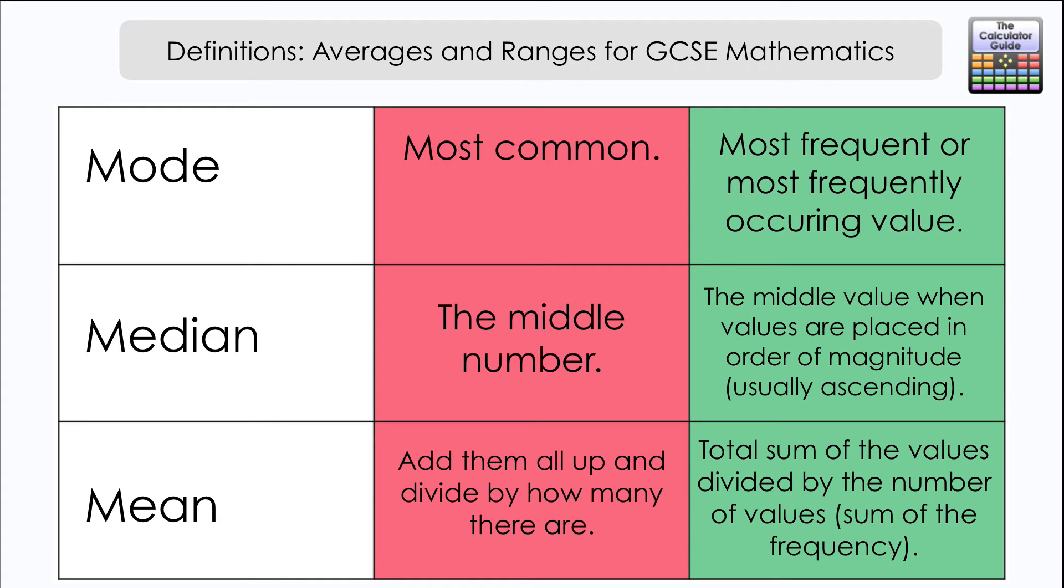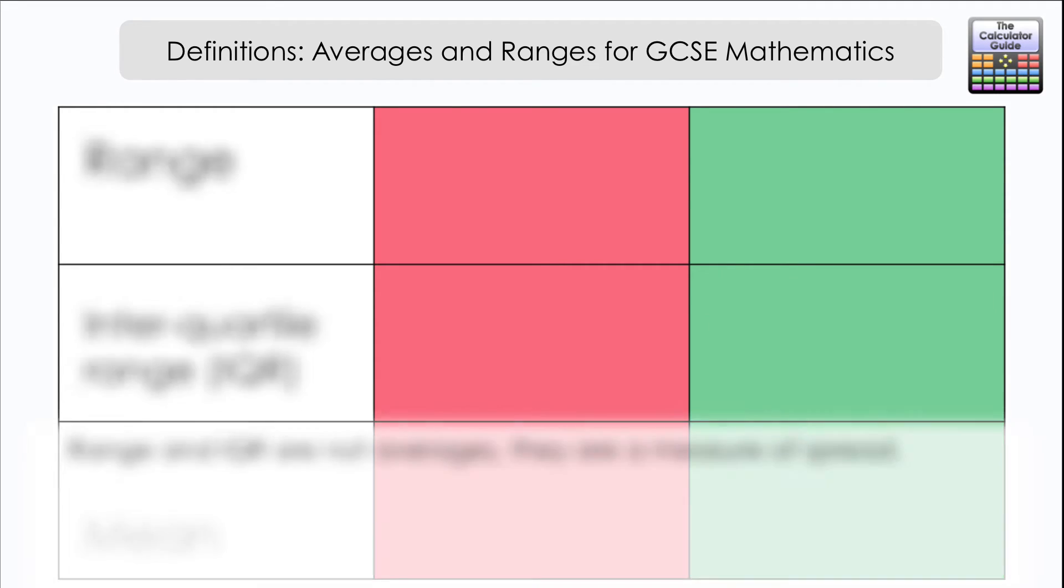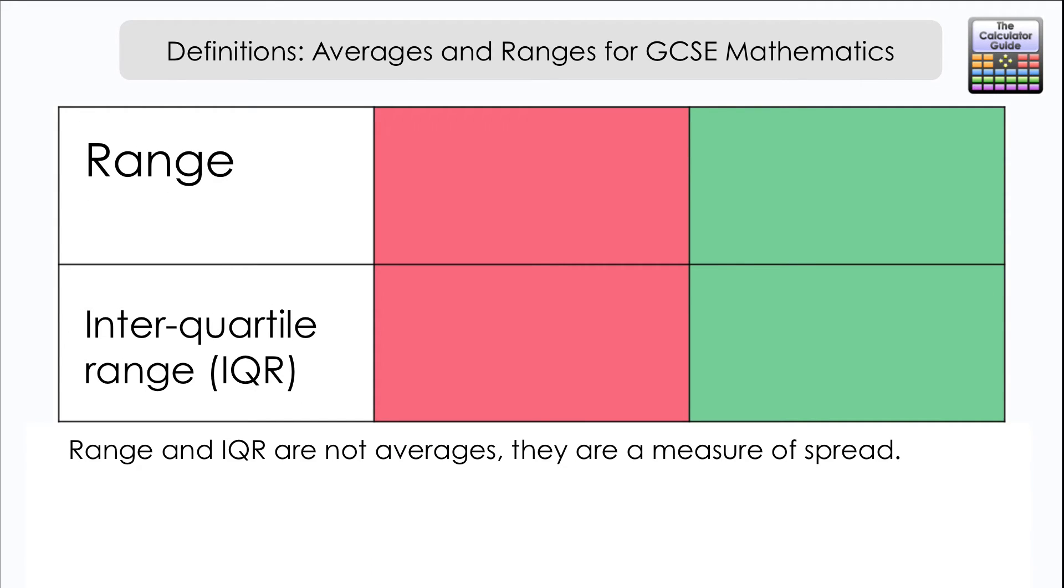Let's move on to the ranges. One of the key things that's important to understand here is that range is not an average. It's in fact a measure of spread, how spread out your data is. There's two different variations that we use at GCSE Maths.